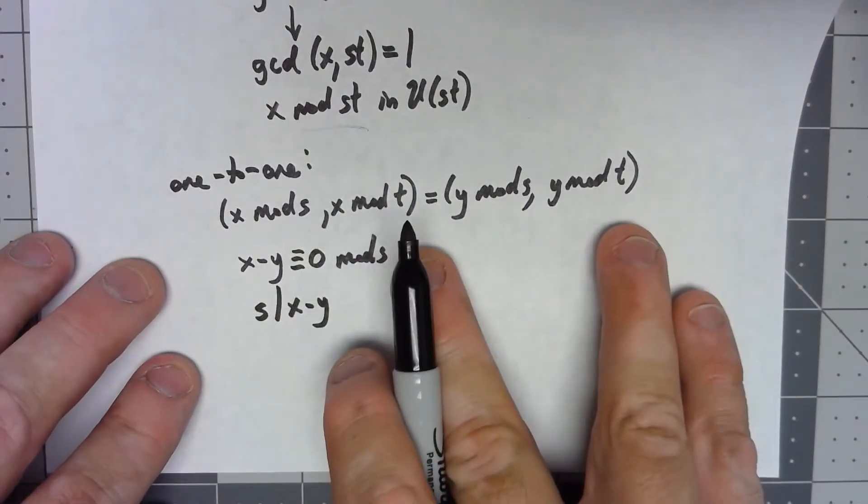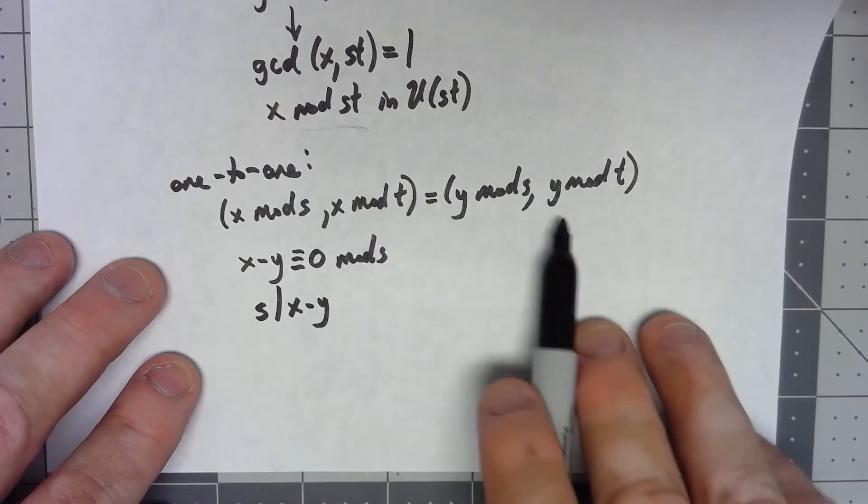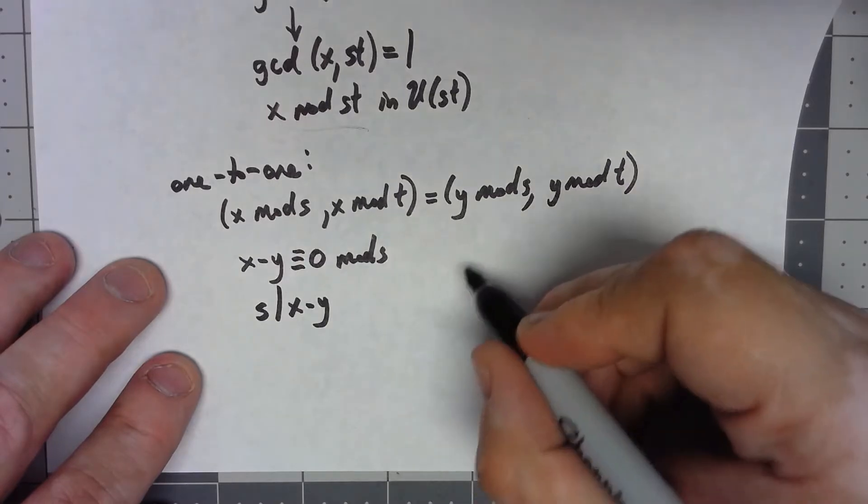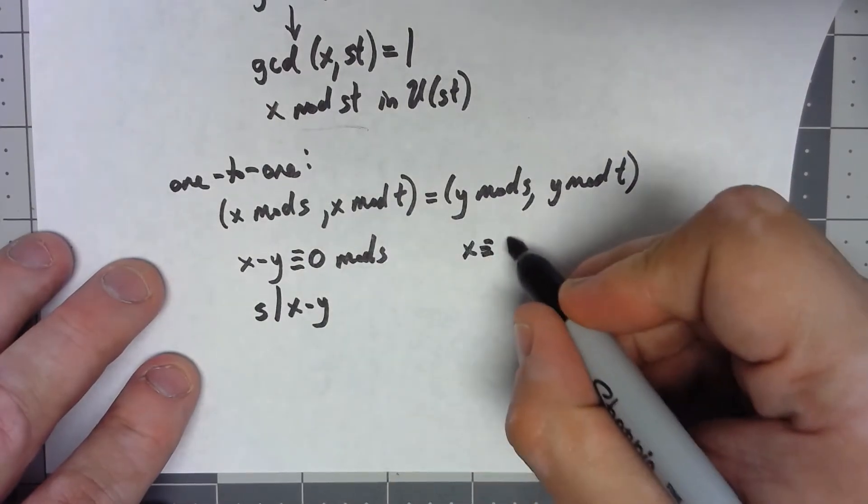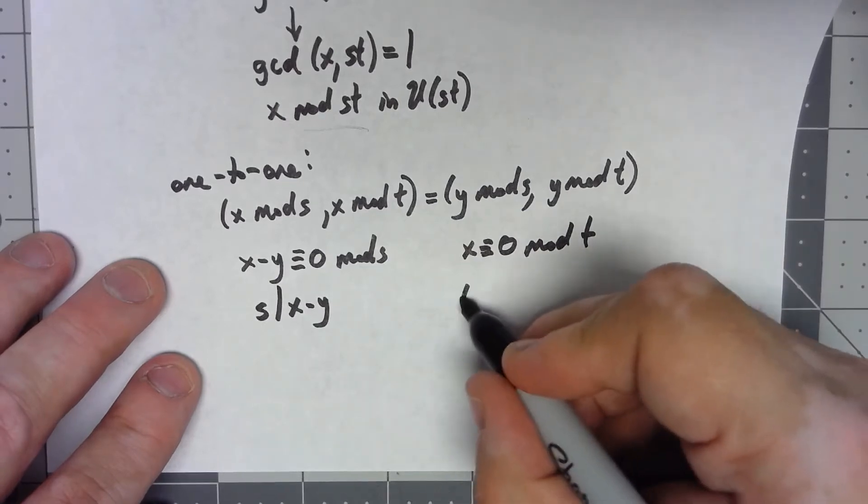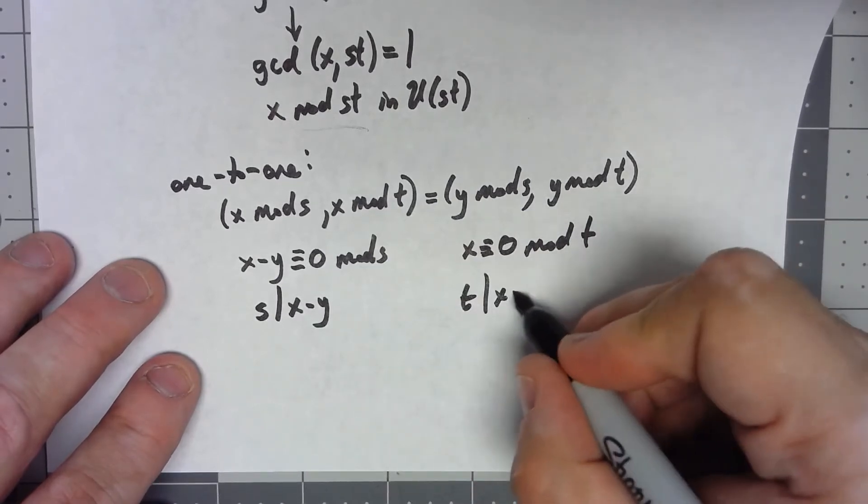Same thing if I look at the second thing. If x mod t is equal to y mod t, they don't have to be the same exact number, but they have to be congruent to each other mod t, or t has to divide x minus y.